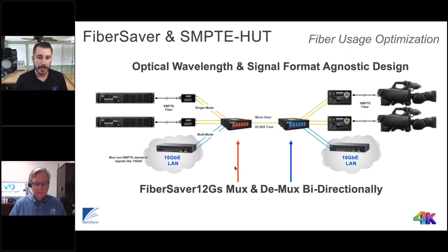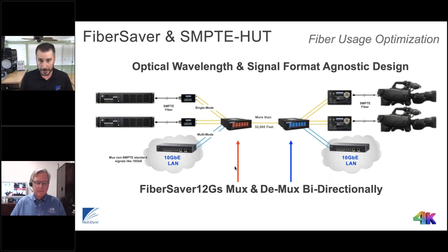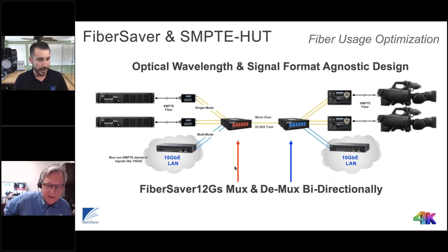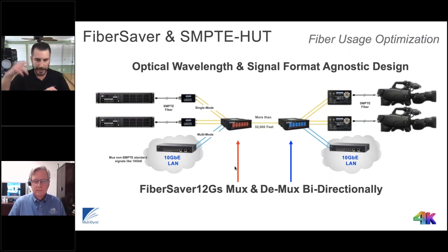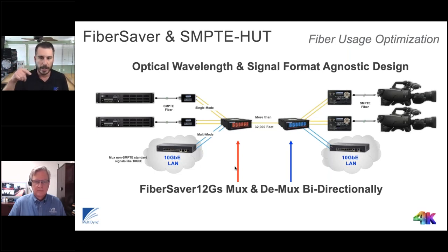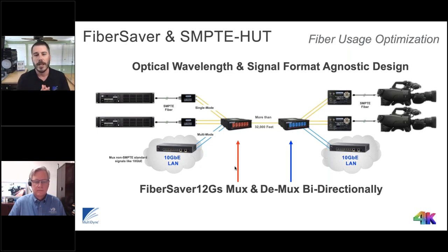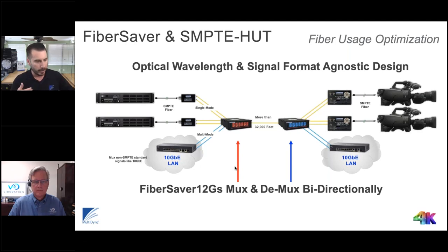This drawing shows leveraging multimode on the edge. Multimode is notoriously not CWDM-friendly because the core size is 50 or 62.5 micron, causing modal dispersion and chromatic dispersion. You need that tight core for the refraction to be tight enough so signals don't get crosstalk. Multimode is always a non-starter for high-bandwidth signals like 12G — you get very short runs in contrast to single-mode.